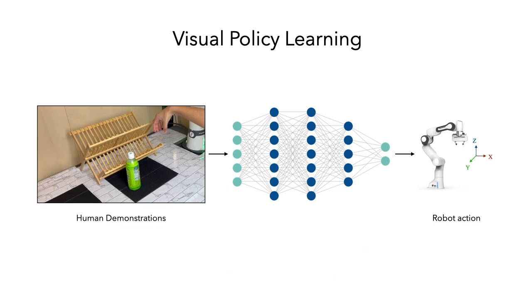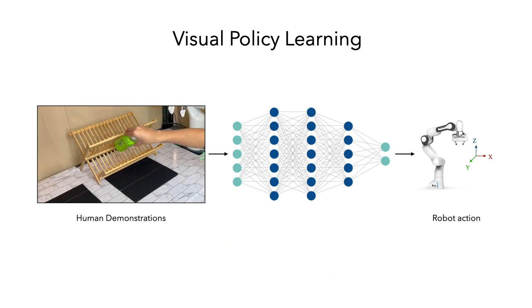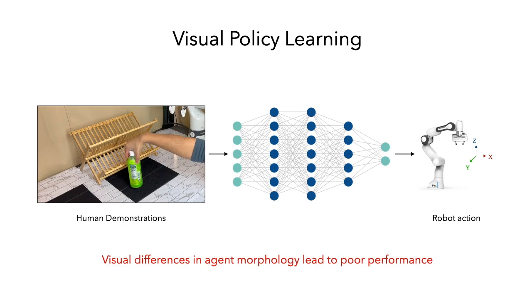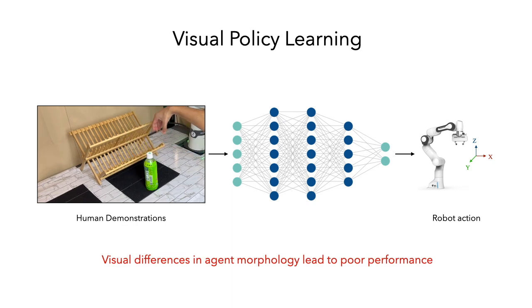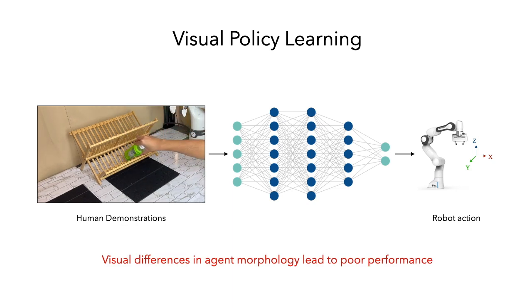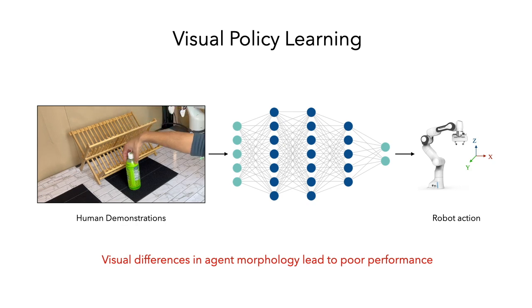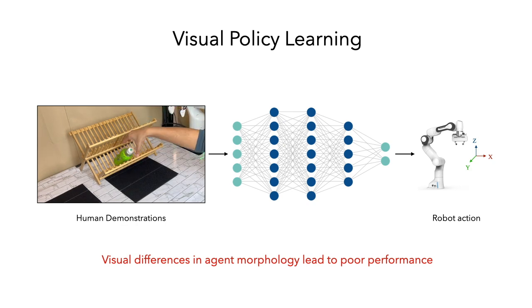Further, when learning from human demonstrations, the visual differences between a human hand and a robot lead to poor performance. Hence, in Point Policy, we propose a framework that enables learning robot policies exclusively from human demonstrations.